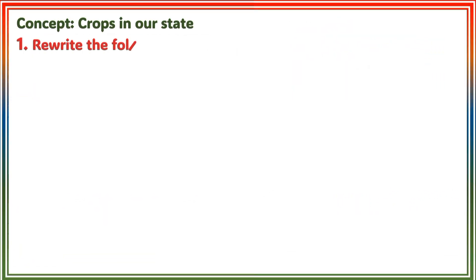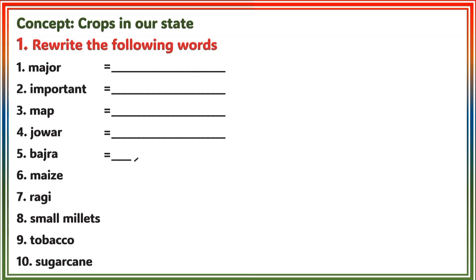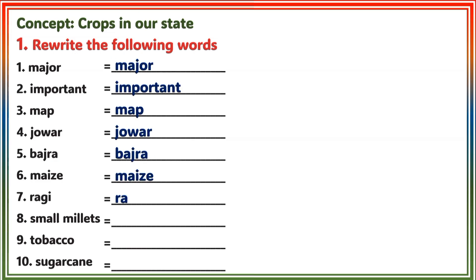Worksheet 8 Concept: Crops in Our State, Section 1. Rewrite the following words: Major, Important, Map, Jowar, Bajra, Maj, Raji, Small Millets, Tobacco, Sugarcane.